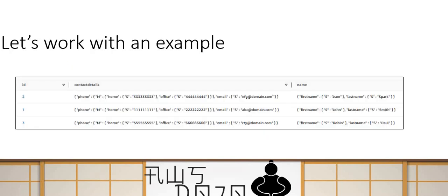Let's work with an example to understand how this Flatten transformation works — the same example I'm going to use in the demo. Here I have three rows of records: simple data with an integer ID, plus nested data. The name field has first name and last name, the contact details field has phone and email, and phone has further home phone and office phone. This hierarchy can go on, but I'm using this as a simple example.